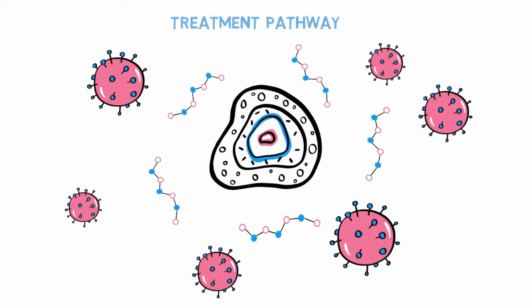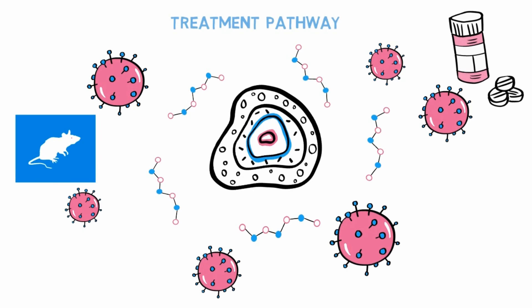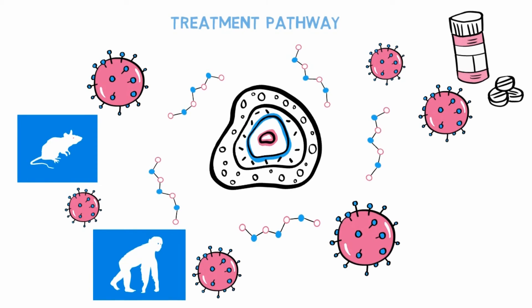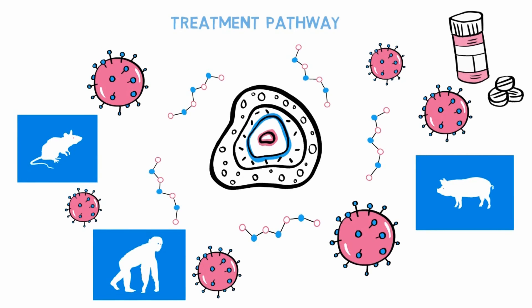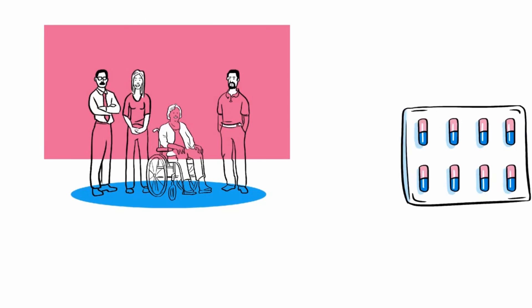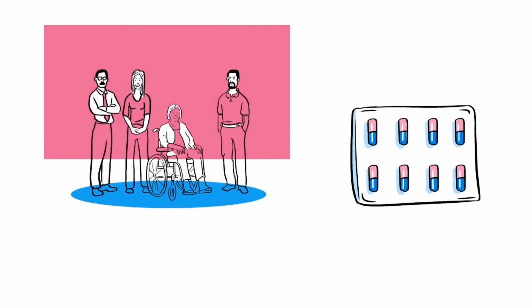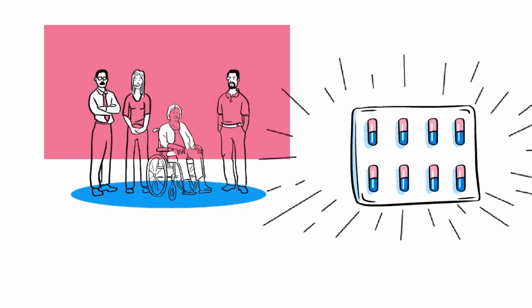4. Develop a potential treatment or therapy. 5. Test the treatment in appropriate animals to ensure that it works and is safe. 6. Test the treatment in patients to ensure that it works and is safe in people. If all this goes to plan, you have a new treatment.